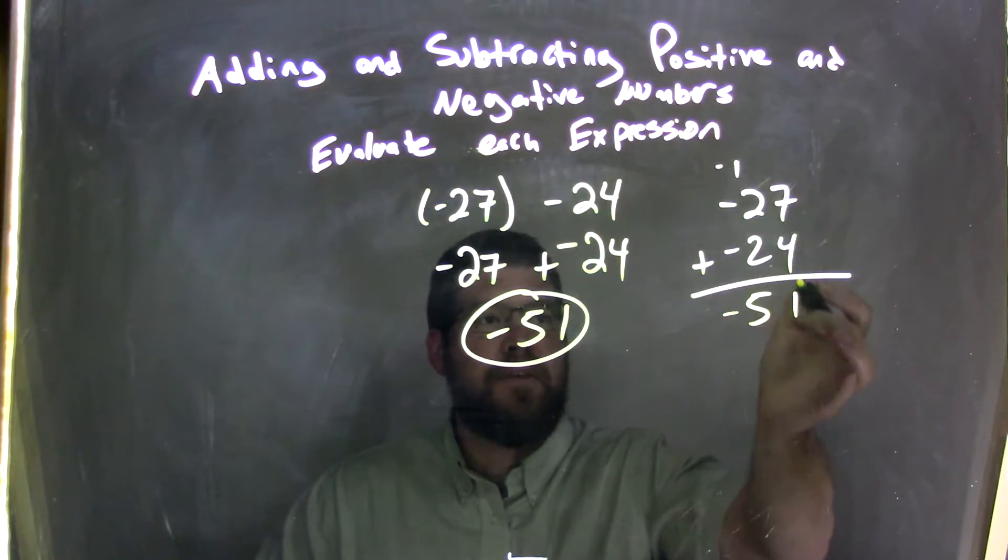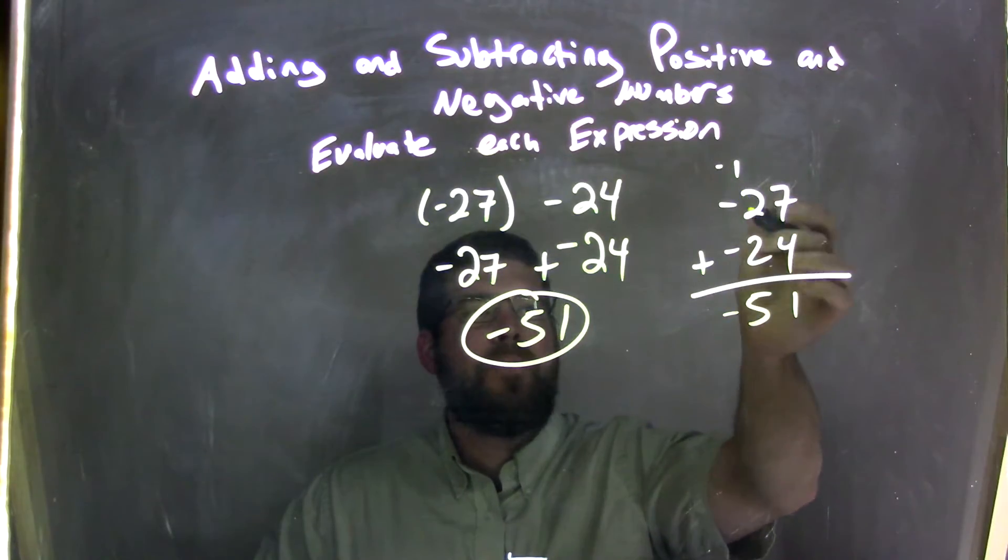7 plus 4 is 1, carry the 1, right? It's 11, carry the 1, and then 1, 2, and 2 is 5, so we have negative 51 as our final answer.